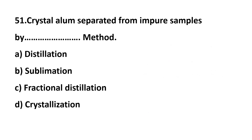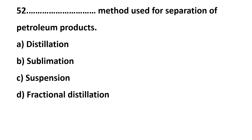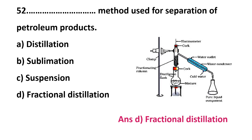Question 51: crystal alum separated from an impure sample by __ method — distillation, sublimation, fractional distillation, or crystallization? The correct answer is option D: crystallization. Question 52: __ method used for separation of petroleum products — distillation, sublimation, suspension, or fractional distillation? The correct answer is option D: fractional distillation. This method is used to separate petroleum products such as kerosene, petrol, and diesel.